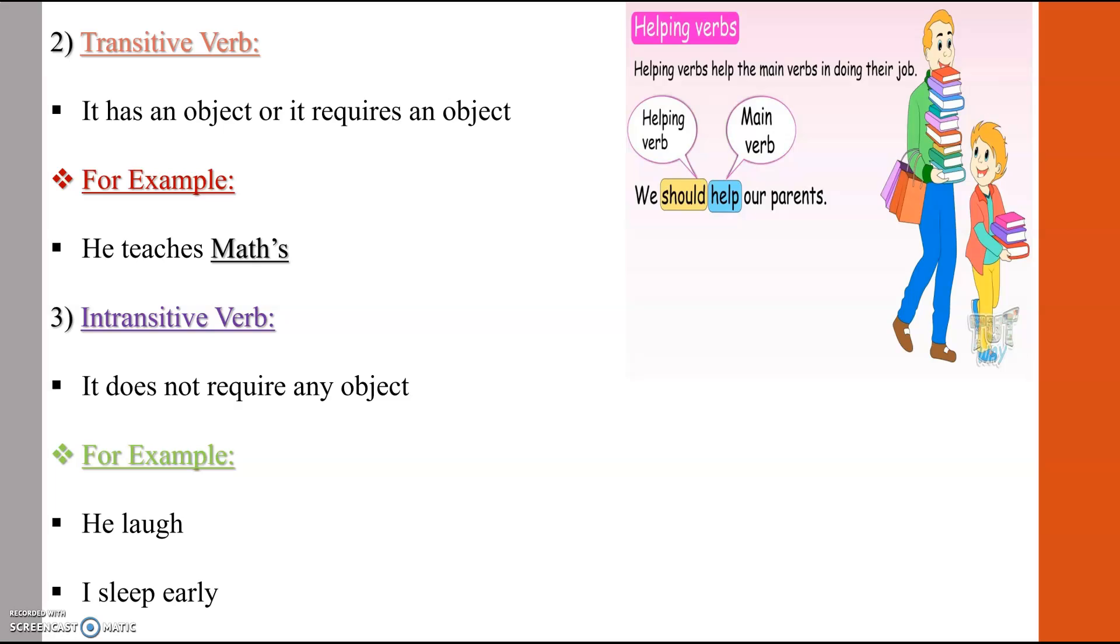In these sentences, the sentence does not have any object. Like he killed, he killed does not have any object. He loved does not have any object. So it is called intransitive verbs.